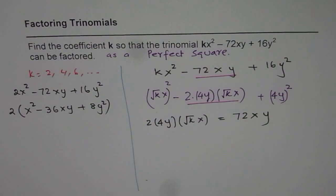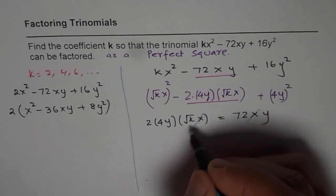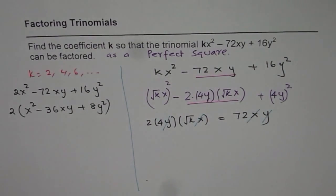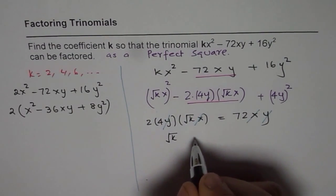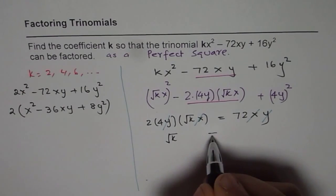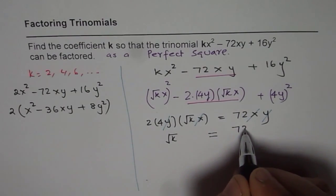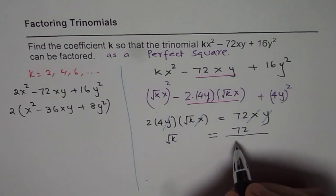Now, from here, we can say, x and x will cancel out, y and y will cancel out. So we have √k equals to, we'll simplify numbers later, equals to 72 divided by 2 times 4.